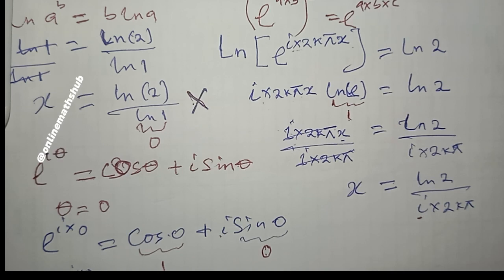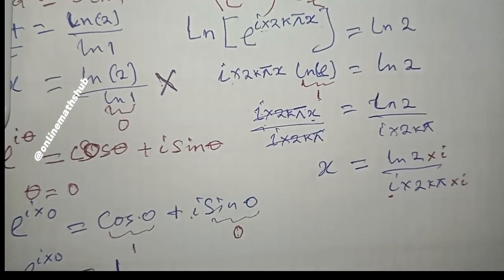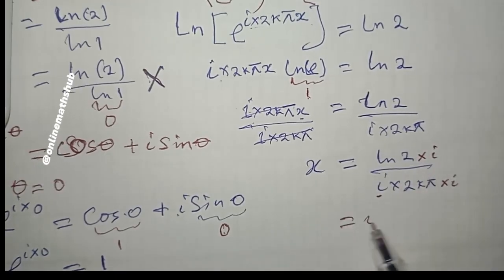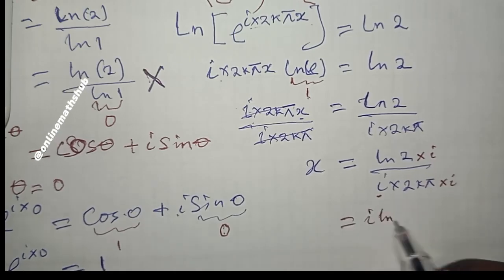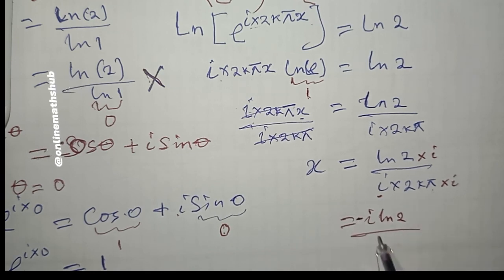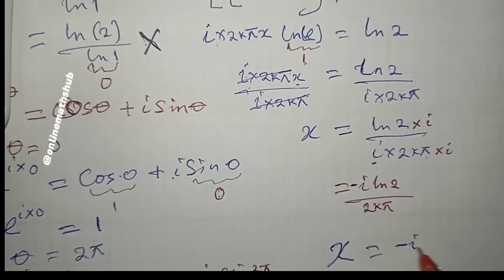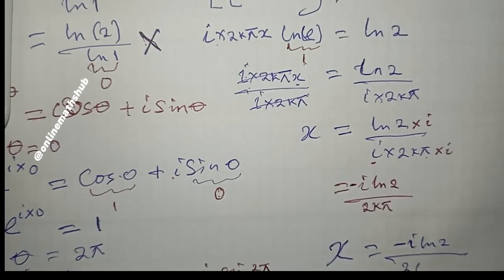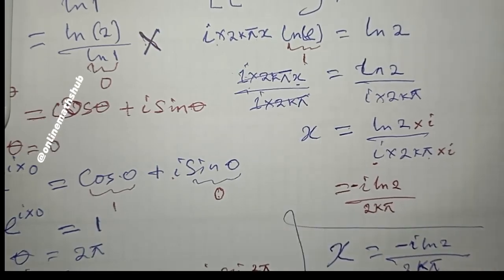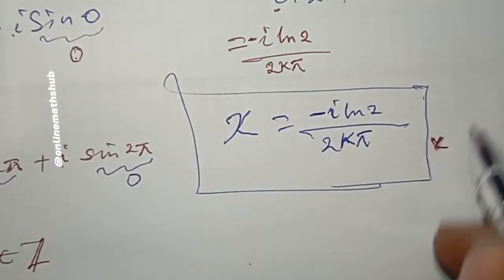To remove i from the denominator, we multiply both numerator and denominator by i. The numerator becomes i·ln(2), and the denominator becomes i·i = −1, times 2kπ, giving −2kπ. Bringing the negative sign to the numerator, the final value of x is: x = −i·ln(2) / (2kπ).